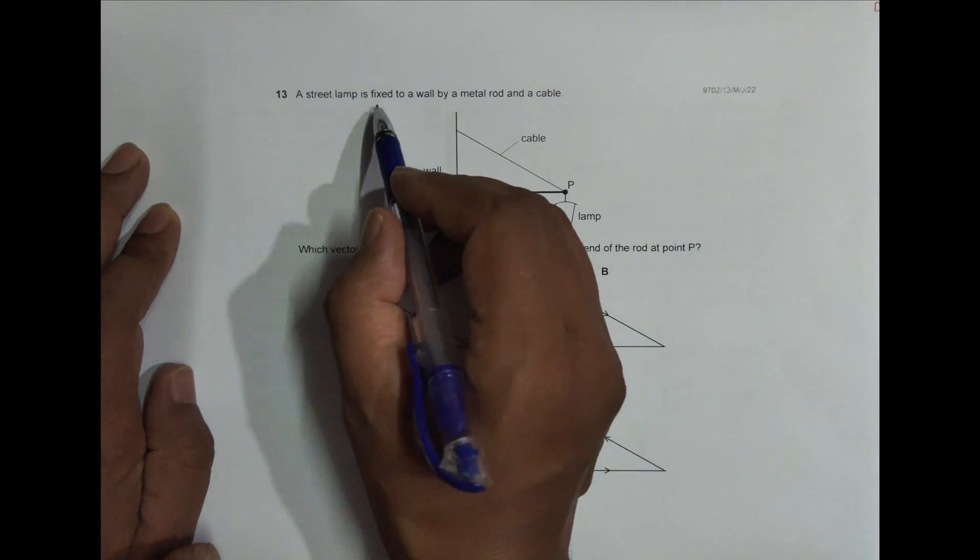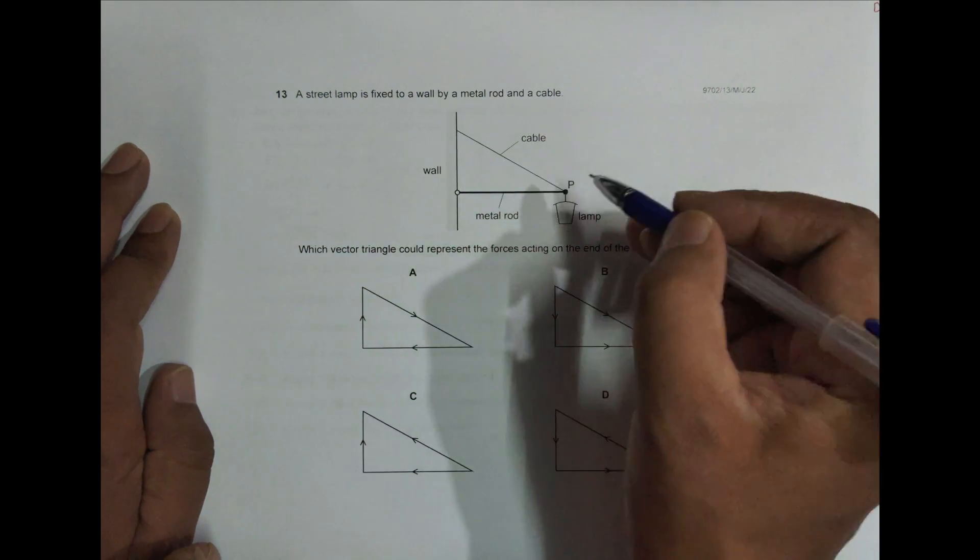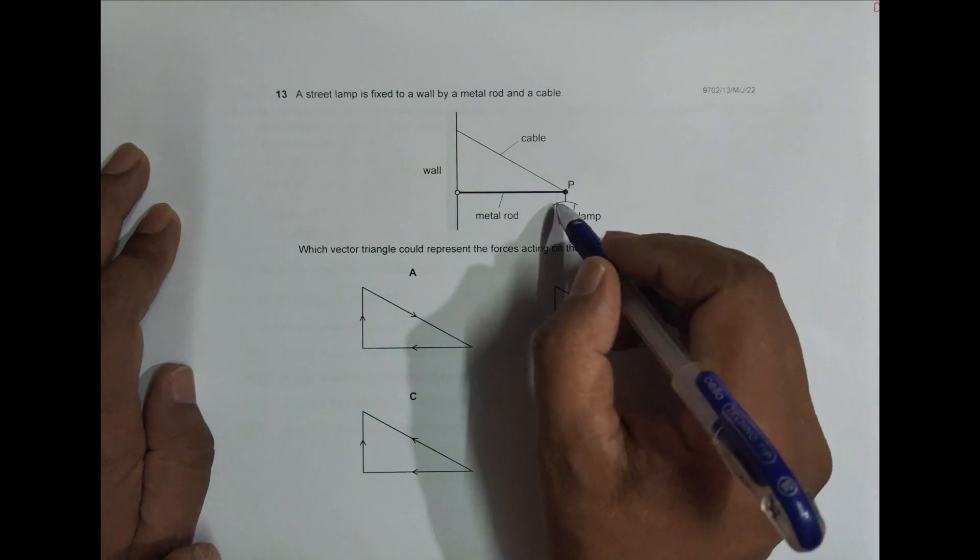It says a street lamp is fixed to a wall by a metal rod and a cable. So this is cable, this is metal rod, this is the lamp here.